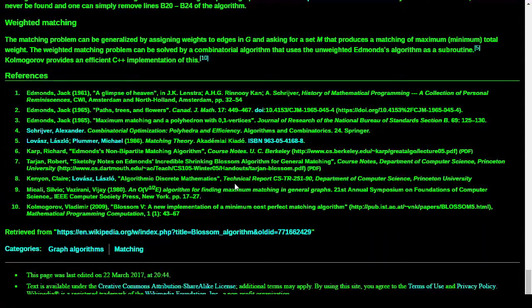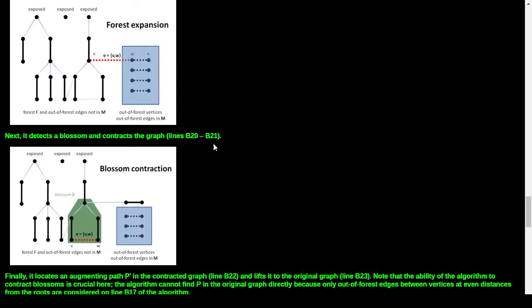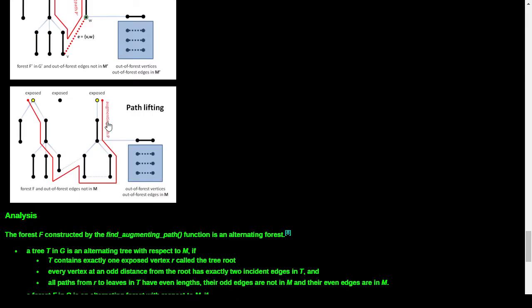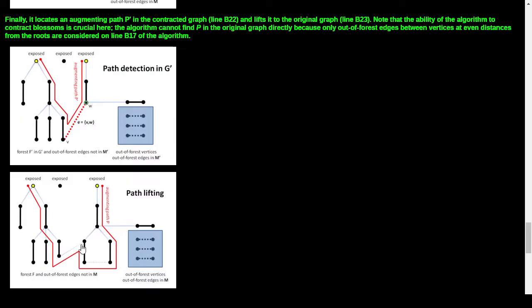So that's all theory - took longer than expected to read through. I'm still not entirely following the example. We've got this forest of alternating trees. When we can contract the blossom out of here, we can find an augmenting path. Having found the augmenting path, we connect the two trees along the path. What was confusing me is that the path-lifting causes a node to no longer be a root - it becomes part of the alternating tree of another root.